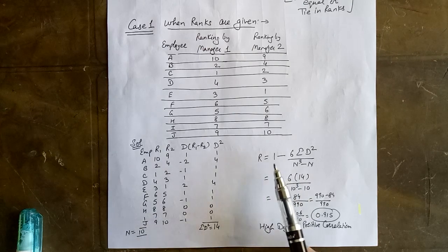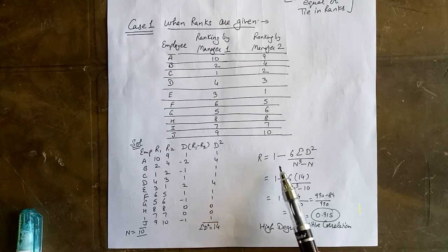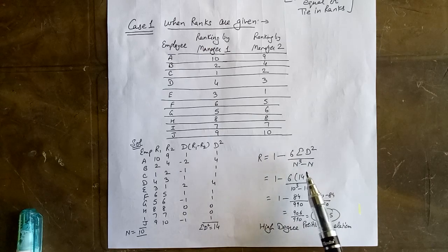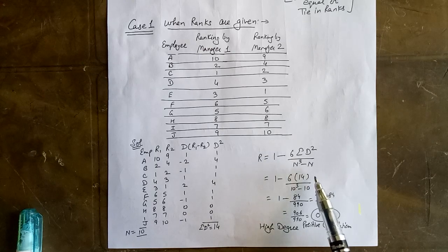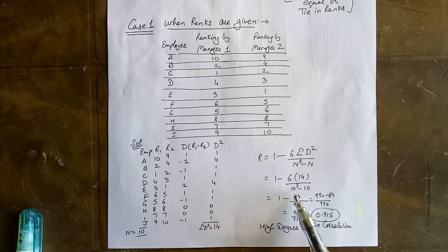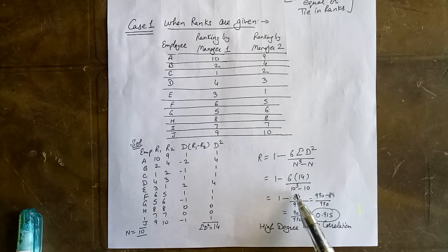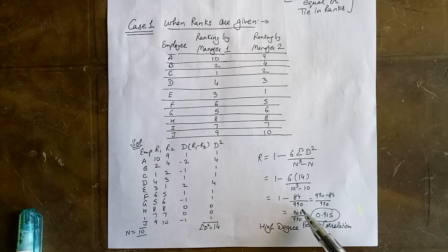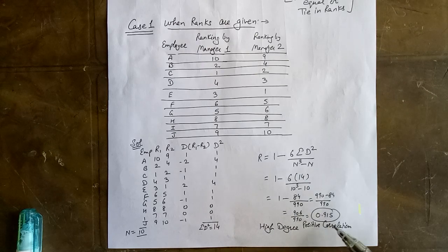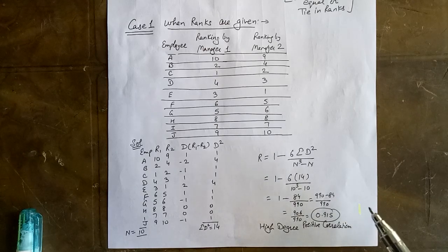Now applying the formula, R equals 1 minus 6 times sigma D-squared over N-cubed minus N. There are 10 observations and sigma D-squared is 14, so R equals 1 minus (6 times 14) over (10-cubed minus 10), which gives 84 over 990. Taking the LCM, this is 906 over 990, which equals 0.915, indicating a high degree of positive correlation. This completes the method when ranks are already given.